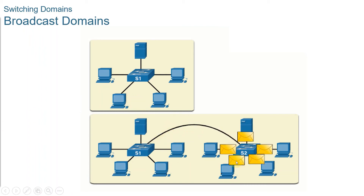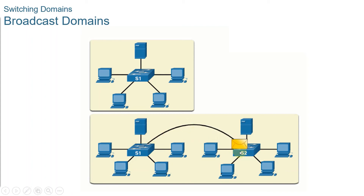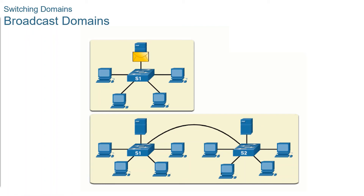Too many broadcasts and heavy traffic load on a network can result in congestion, which slows down network performance. When two switches are connected to each other, the broadcast domain is increased, as seen in this topology diagram. In this case, the broadcast frame is forwarded to all the connected ports on switch 1. Switch 1 is connected to switch 2, and the frame is also propagated to all the devices connected to switch 2.